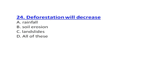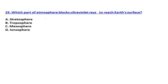Deforestation will lead to decreased rainfall, soil erosion, and landslides — so the answer is all of the above. Which part of the atmosphere blocks ultraviolet rays from reaching the Earth's surface? It is the stratosphere. The ozone layer is present in the stratosphere and it absorbs and blocks harmful ultraviolet rays.